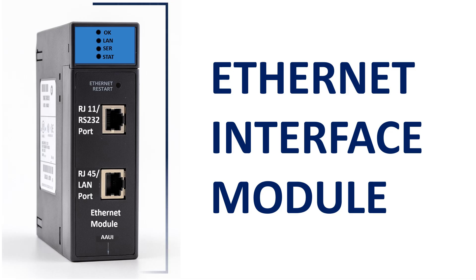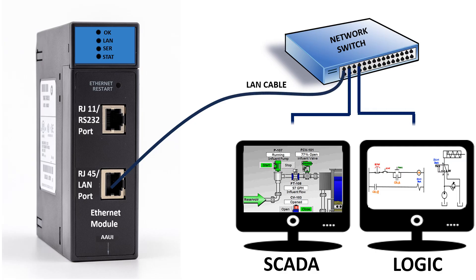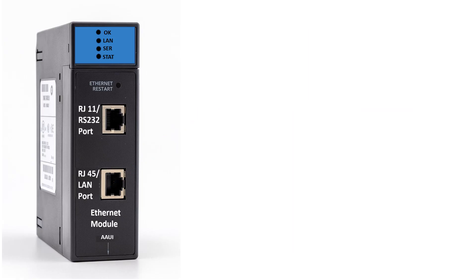This communication module is also called the Ethernet interface module. Its primary function is to enable the PLC to connect to an Ethernet local area network, or LAN, and communicate with host computers. It has 4 LED indicators: OK, LAN, SCR, and STAT. It also has an Ethernet restart button, an RJ11 RS232 port, and an RJ45 fast Ethernet port.